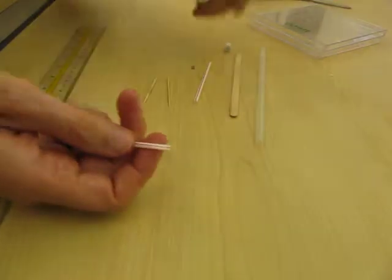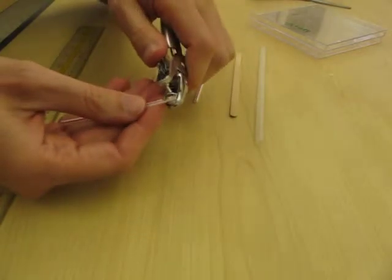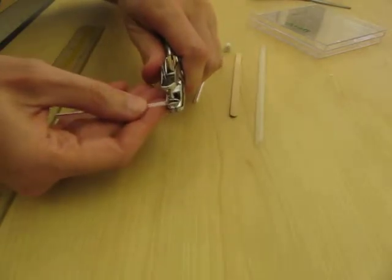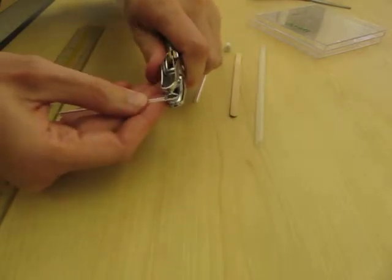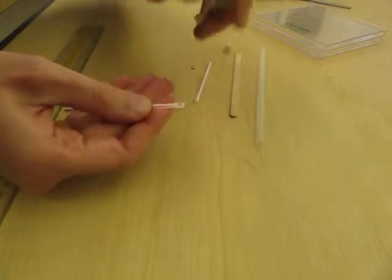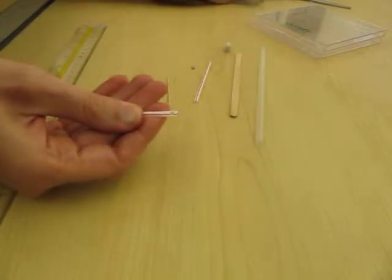If you happen to have a 1⁄8 inch hole punch, it's actually perfect, so I'm going to cheat here a little bit and do my hole this way. It makes a hole that's just large enough to hold the magnet.